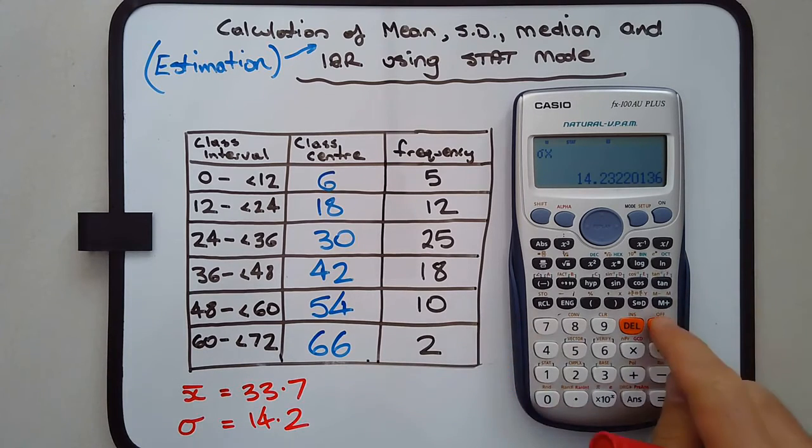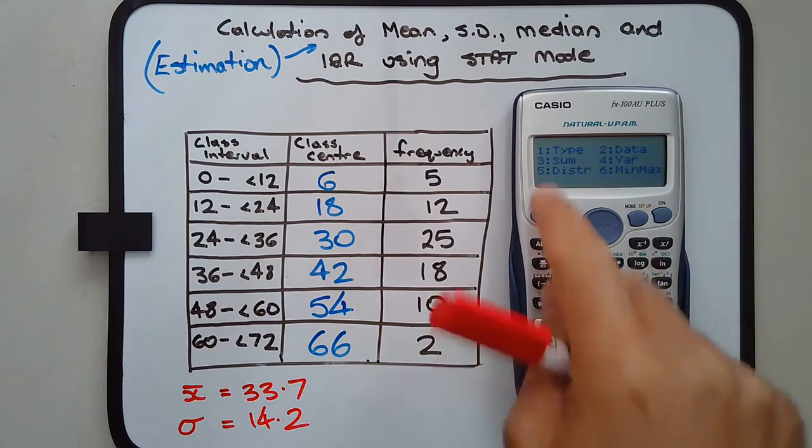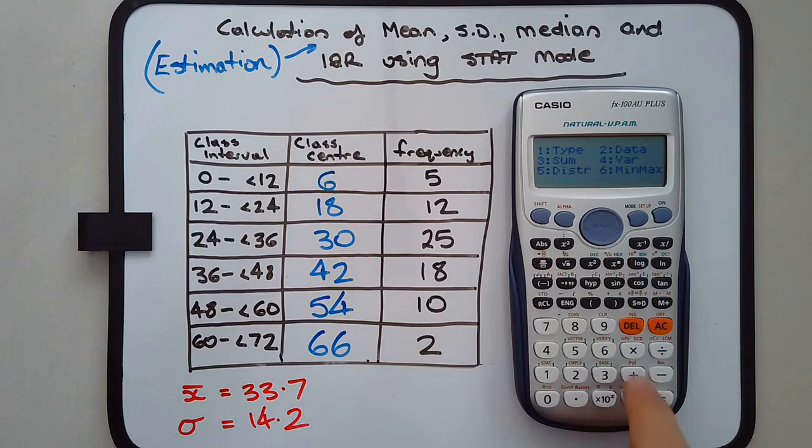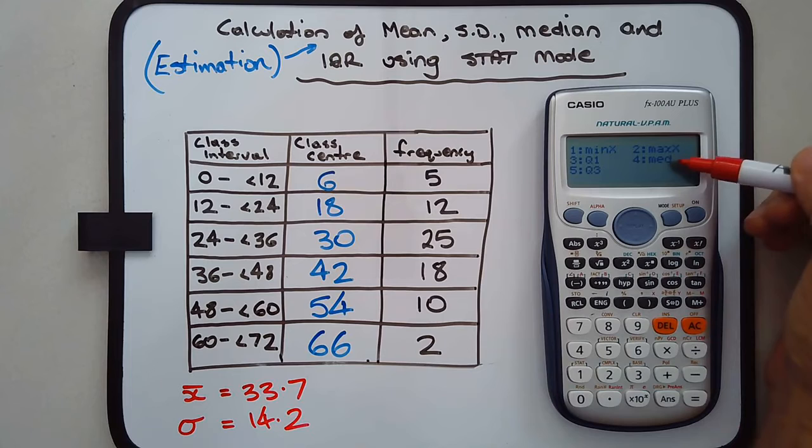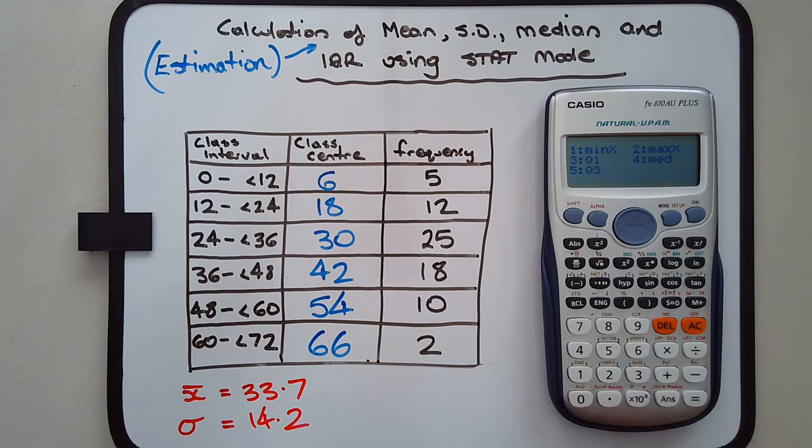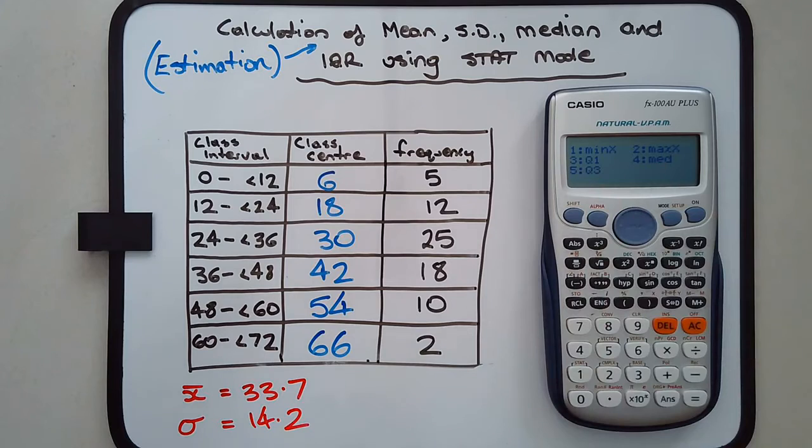Now let's work out the median. Again, shift 1 - you'll get used to this. Number 6, min-max. It's a very handy menu. Number 4 is the median. You see min-max, Q1, median, Q3. Press number 4 for median. Median equals 30.